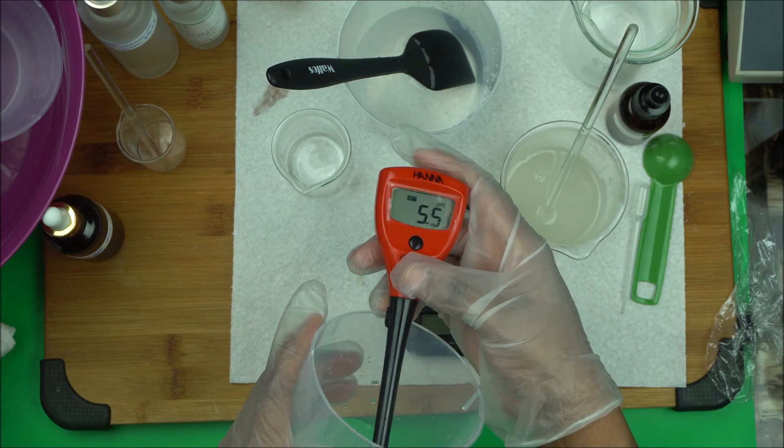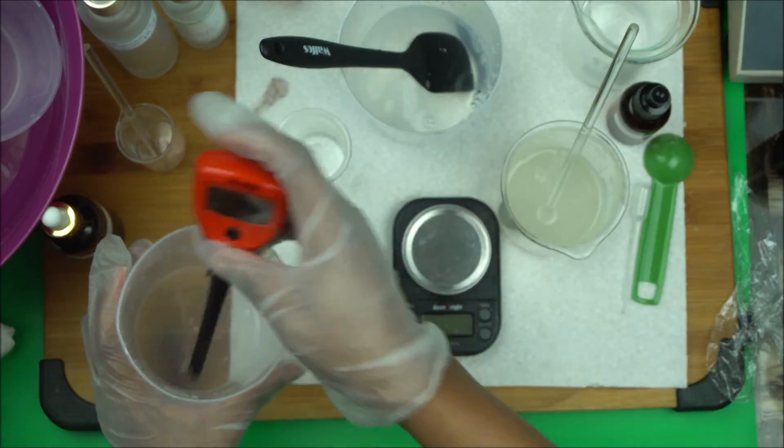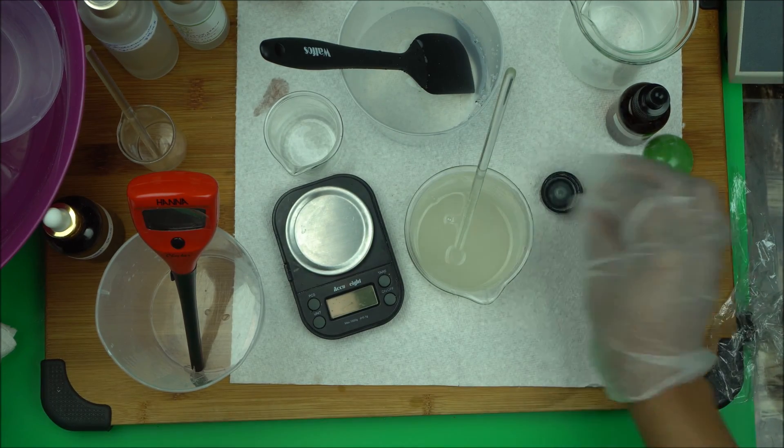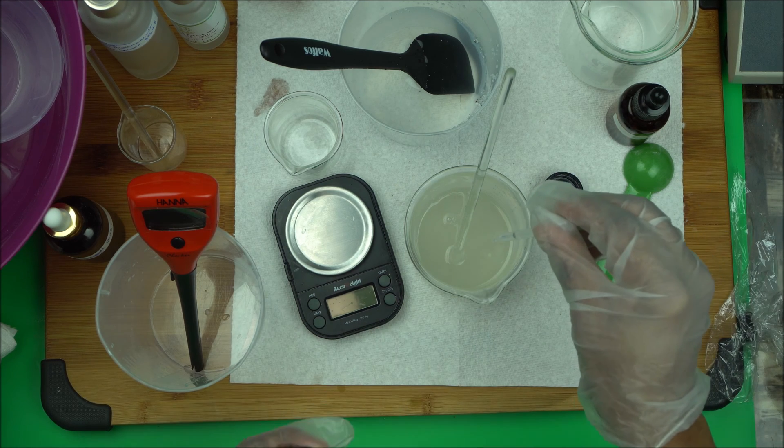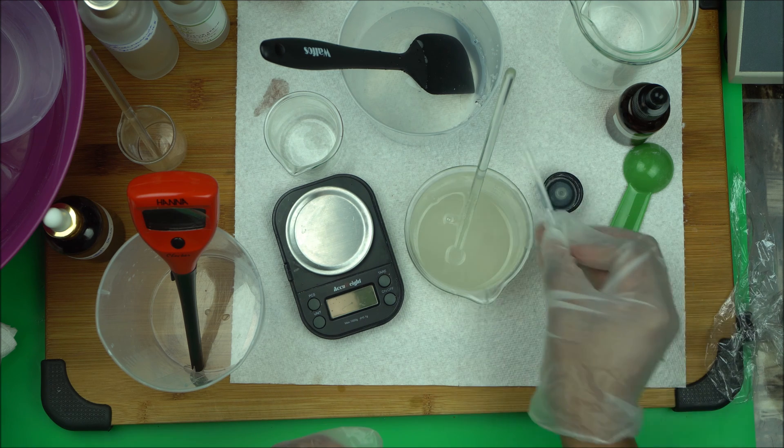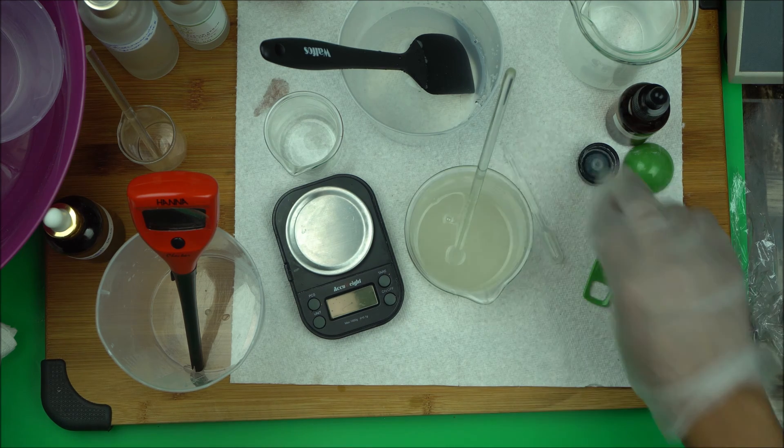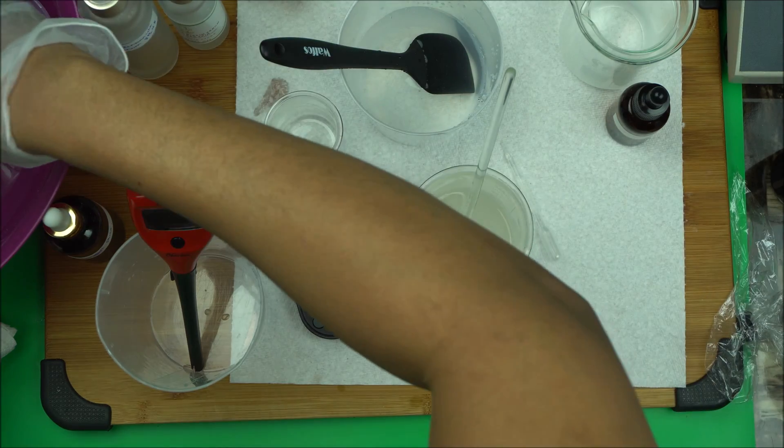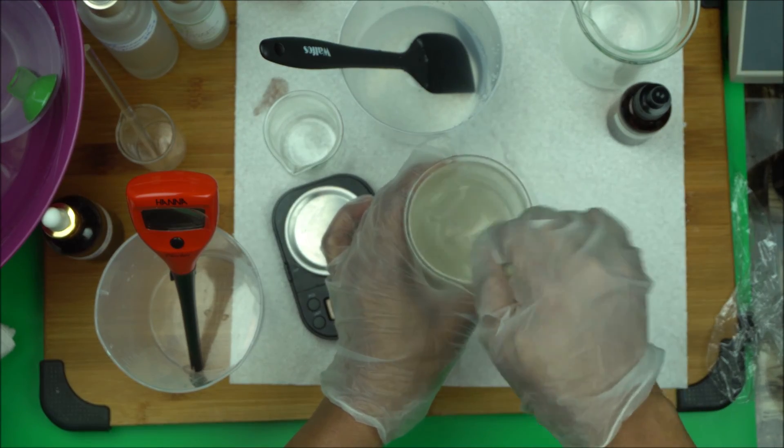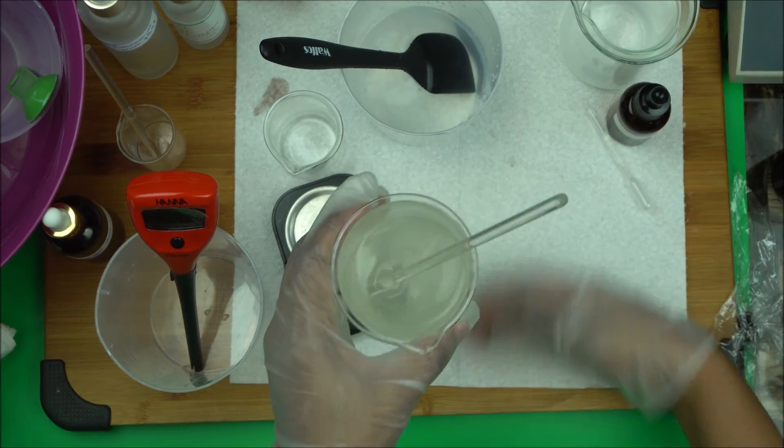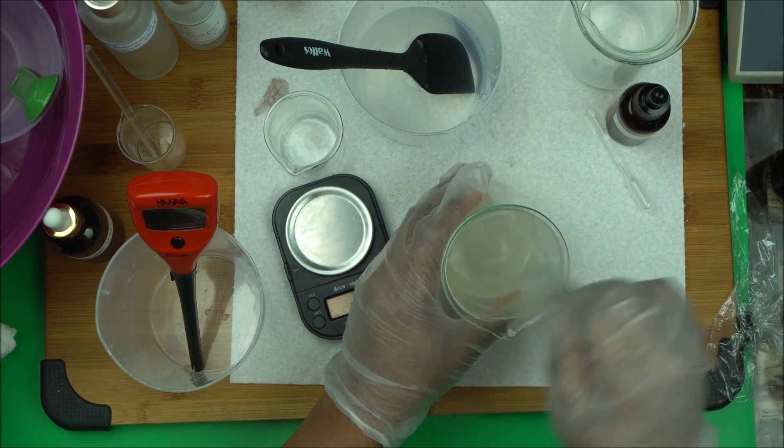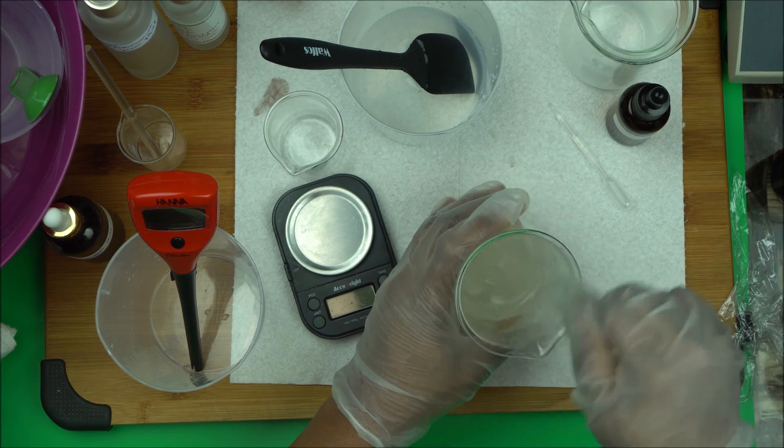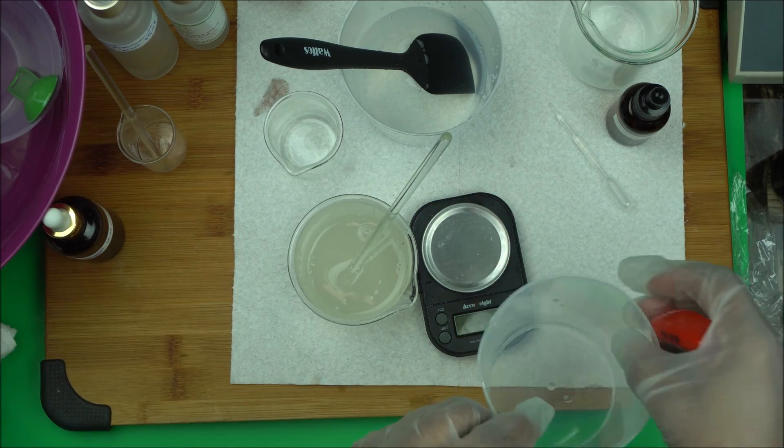You can see this is 5.5 and we will have to adjust it for niacinamide to work properly. It has to be 6. So I will bump it up with lye solution. So I'm going to take one drop at a time. pH checking is harder than anything, is the hardest part of formulation. You cannot escape it. If you want your customer to be happy, especially if you are selling it to the public, you have to make sure you adjust the pH properly. So I added one drop of 10% lye solution.